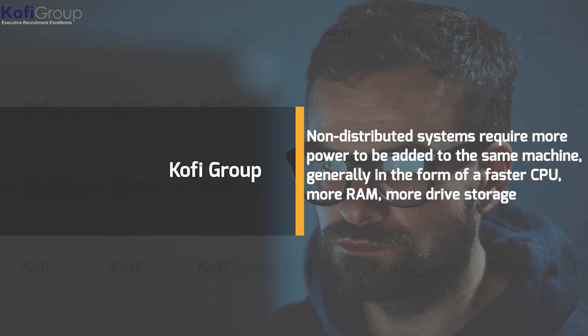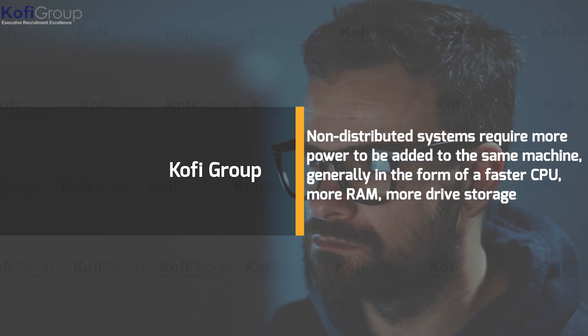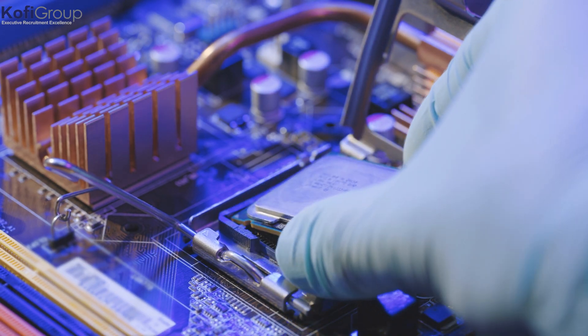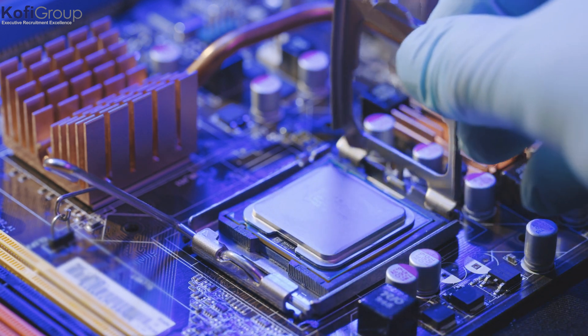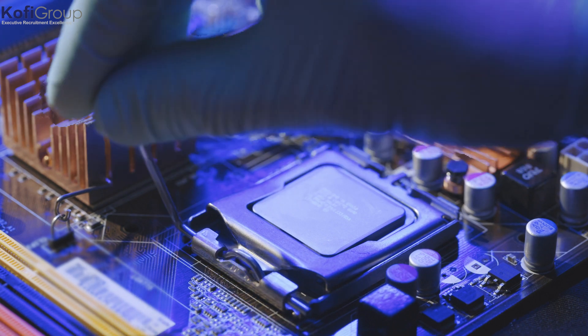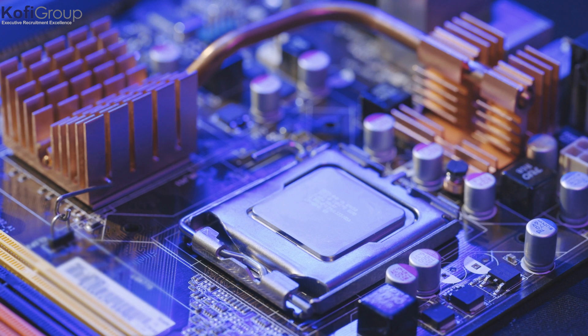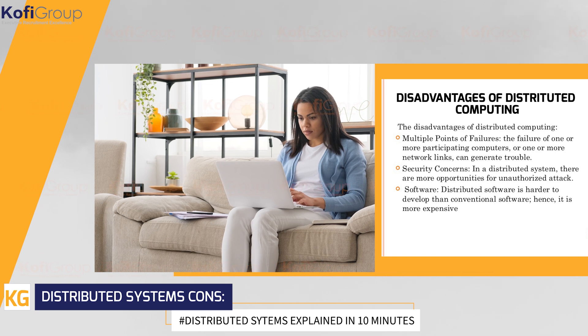Non-distributed systems require more power added to the same machine — a faster CPU, more RAM, more drive storage — but the mainboard capacity has a limit, and vertical scaling eventually requires a full system hardware upgrade, which gets expensive. However, distributed systems tackle too many requests and extended load times by simply adding more machines. You can scale horizontally, as it's far cheaper to add more processors than to buy a single processor with a massive number of cores. Multiple cheaper machines can be thousands of times cheaper than scaling up a single server.